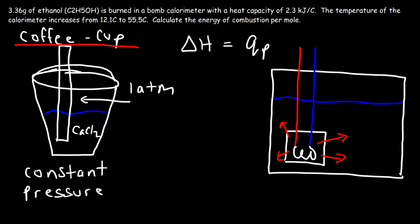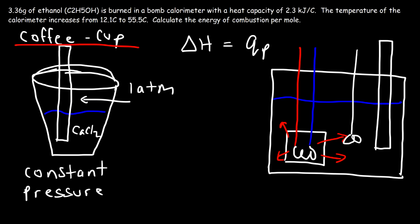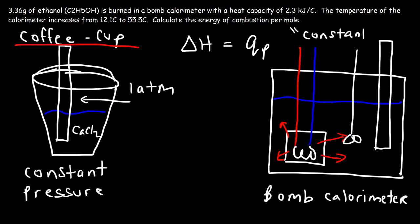Once the sample is ignited, it releases thermal energy into the surroundings. The water absorbs that thermal energy, and a thermometer measures the temperature change. There may also be a stirring device to keep the fluid flowing and distribute energy throughout the solution. The bomb calorimeter is similar to the coffee cup calorimeter but has a combustion chamber, and energy changes are measured at constant volume.